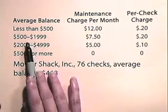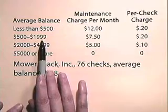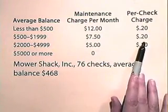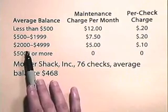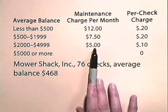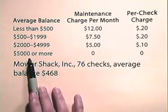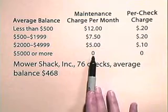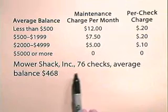If your average balance is between $500 and $1,999, the maintenance charge per month is $7.50, and the per check charge is $0.20. If your average balance is between $2,000 and $4,999, then the maintenance charge per month is $5, and the per check charge is $0.10. If your average balance is $5,000 or more, the maintenance charge per month is $0, and your per check charge is $0.00.